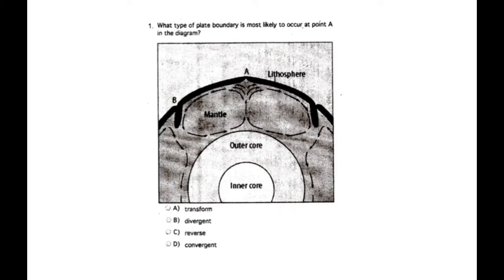Number one says what type of plate boundary is most likely to occur at point A in the diagram? Here's point A in the diagram, so A is between these two plates right here. If we're looking at this plate and this plate, what's happening right there? If you look in the mantle here, we see these arrows where the magma is sort of spinning around in circles, and those are those convection currents.